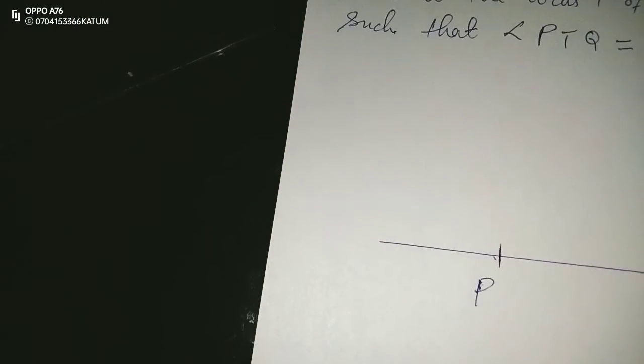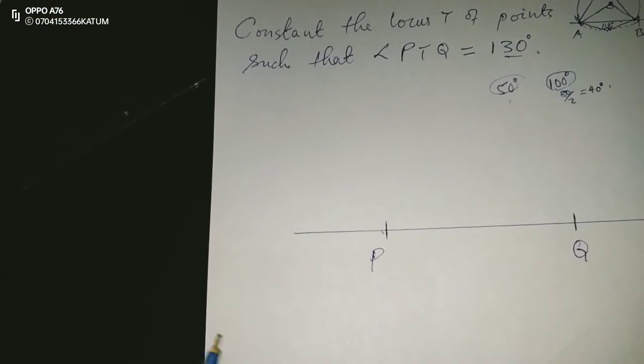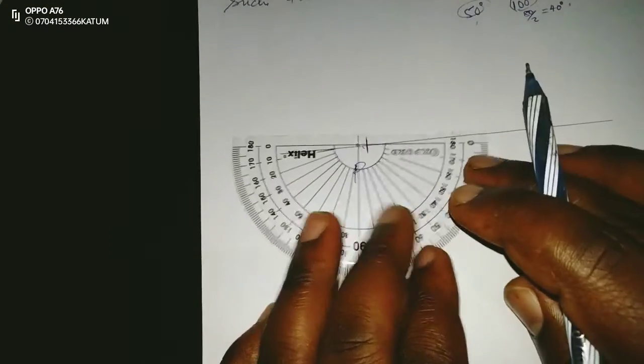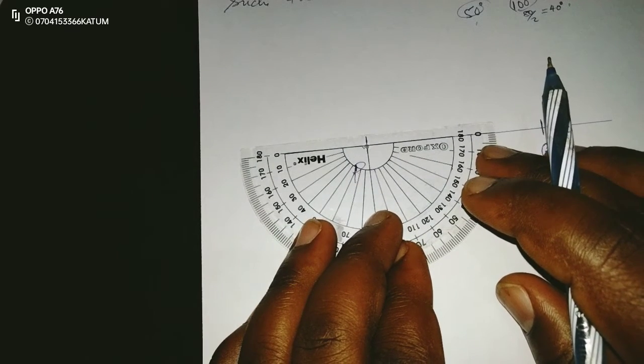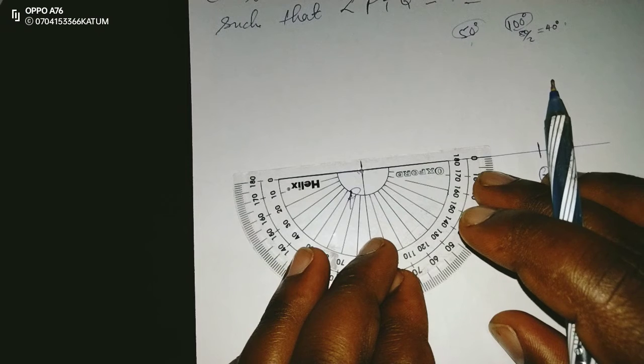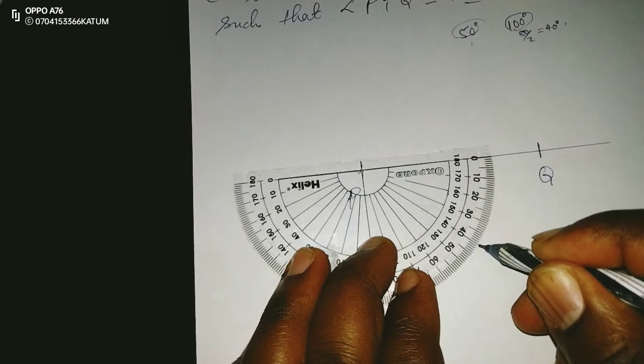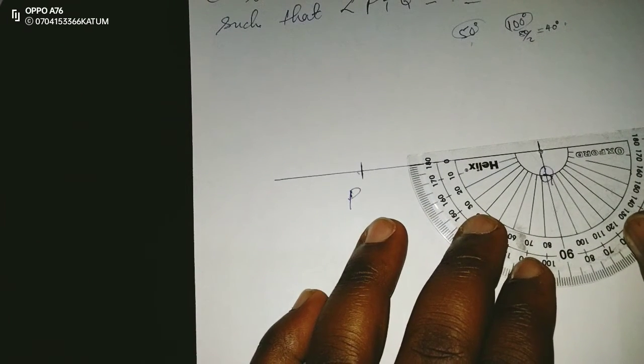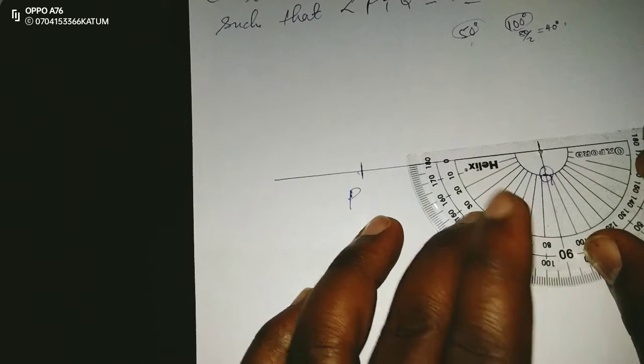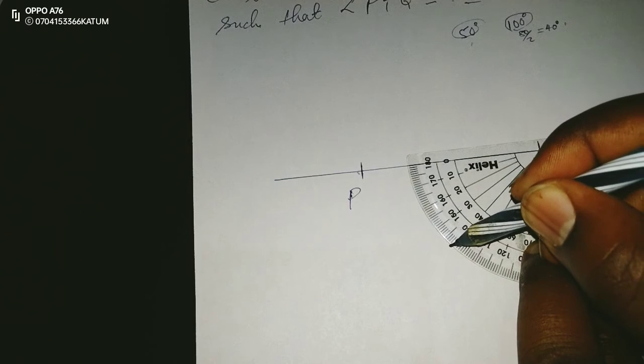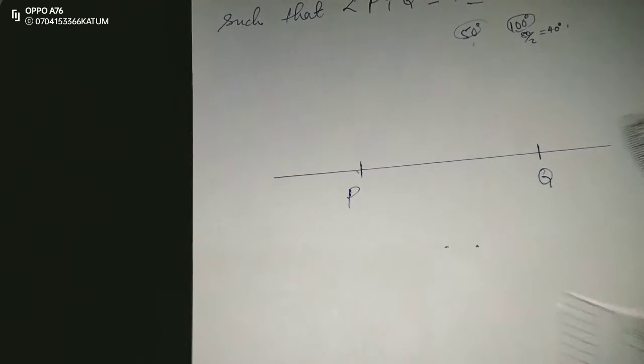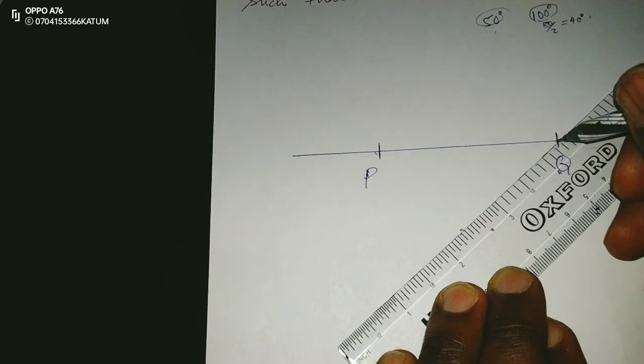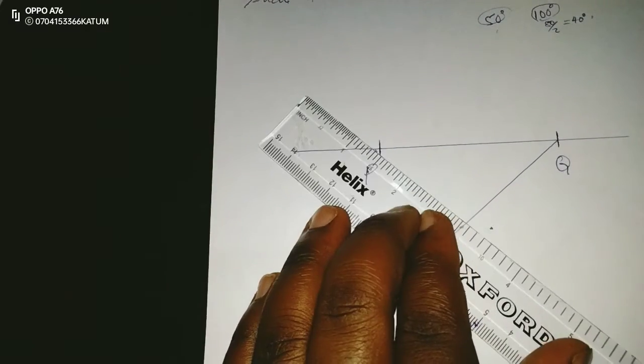So what we do in this case is that with our protractor we measure 40 degrees as base angles. Let me construct very well and accurately. So 40 degrees from P and also 40 degrees from Q. We construct 40 degrees from P.